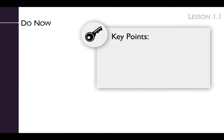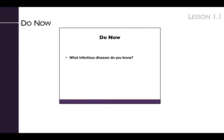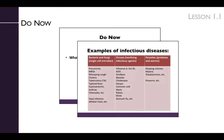The key points of the lesson's Do Now are that infectious diseases impact all of us, and that there are different classes of infectious agents. The Do Now begins by brainstorming a list of infectious diseases. This can be done individually on student worksheets or as a class discussion. Next, compile the students' responses on the board and try to sort them based on the type of microbe that causes the disease — bacteria and fungi, viruses, or parasites. The slide shows a number of pathogens that we will learn about throughout the module.